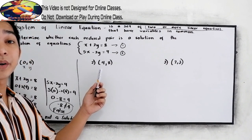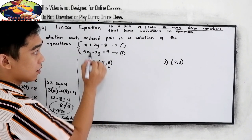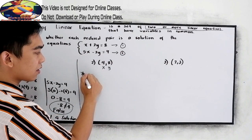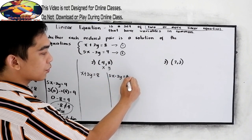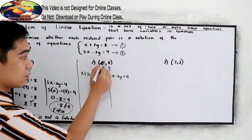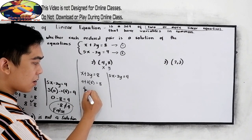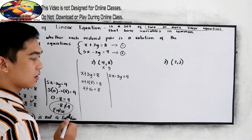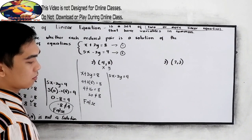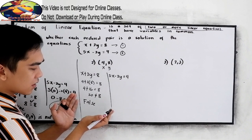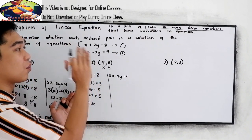Now let us proceed to problem number 2. We have the point (4, 8), so x equals 4 and y equals 8. Substituting into equation 1: 4 plus 2 times 8 equals 8, which gives 4 plus 16 equals 20. Since 20 is not equal to 8, equation 1 gives us a false answer. So automatically, (4, 8) is not a solution of our system of equations.